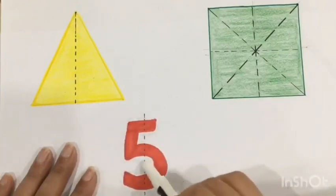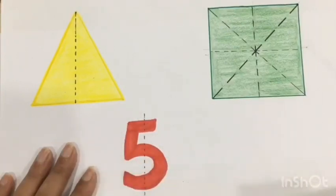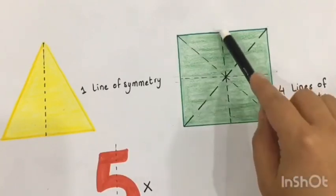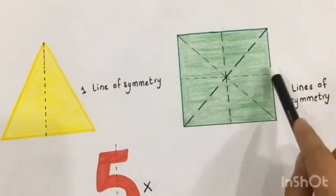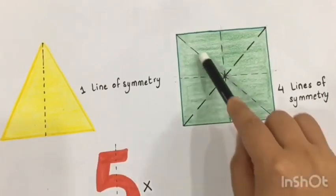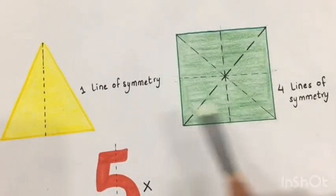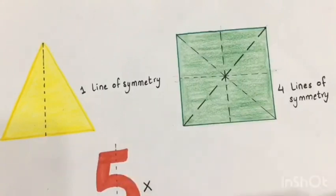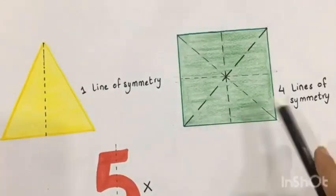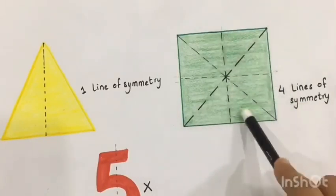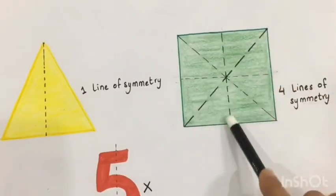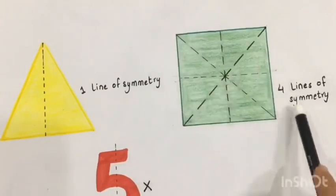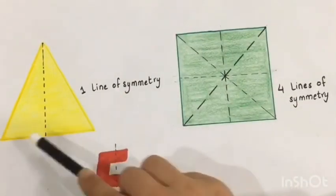Let's count the lines of symmetry for square: one, two, three, and that is four. So square has four lines of symmetry, whereas a triangle like this one has one line of symmetry, and five does not have a line of symmetry.